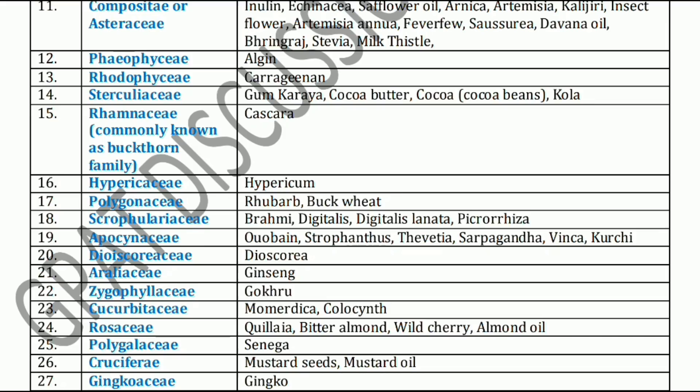Next family is Zygophyllaceae family. Zygophyllaceae family includes Gokhru. Next family is Cucurbitaceae family, which mainly includes Momordica and Colocynth. Next family is Rosaceae. Rosaceae family includes Quillaia, Bitter almond, Wild cherry, and Almond oil. Next, Polygalaceae family. Polygalaceae family includes Senega.